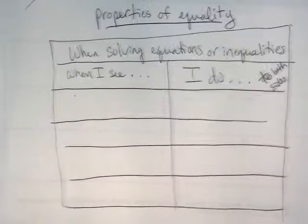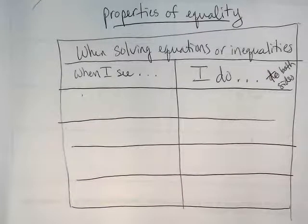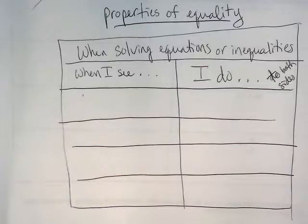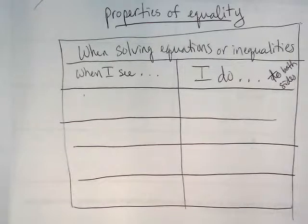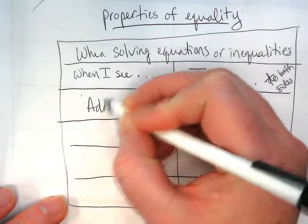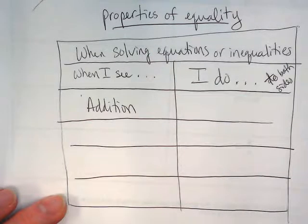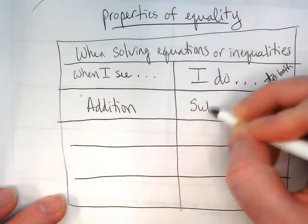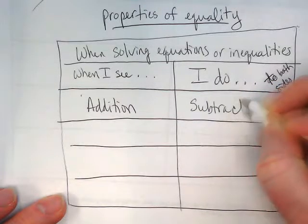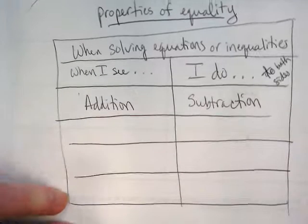Whether it's an equation or an inequality, it's like a scale that we have to keep balanced. If we do it on one side, we have to do it to the other side. So when I see addition, what's the opposite of addition? Subtraction. So when I see addition, I do subtraction.